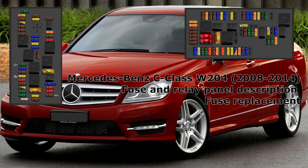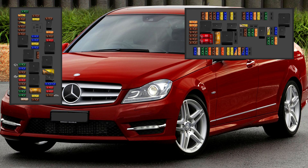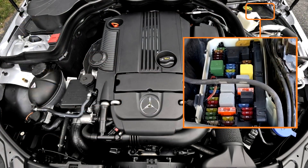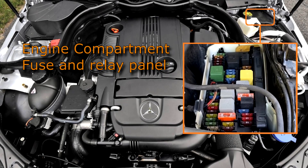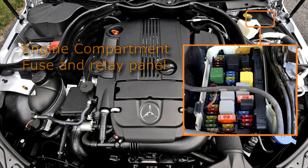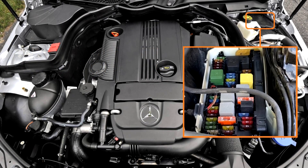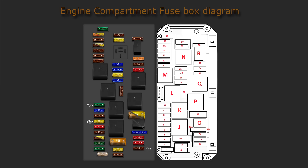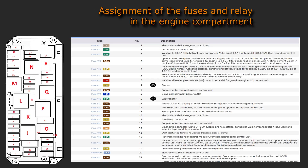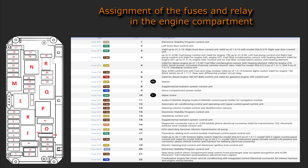Fuse and Relay Panel Description — Fuse Replacement. Engine Compartment Fuse and Relay Panel: the fuse box is located in the engine compartment, left side, under the cover. Engine Compartment Fuse Box Diagram. Assignment of the Fuses and Relay in the Engine Compartment.